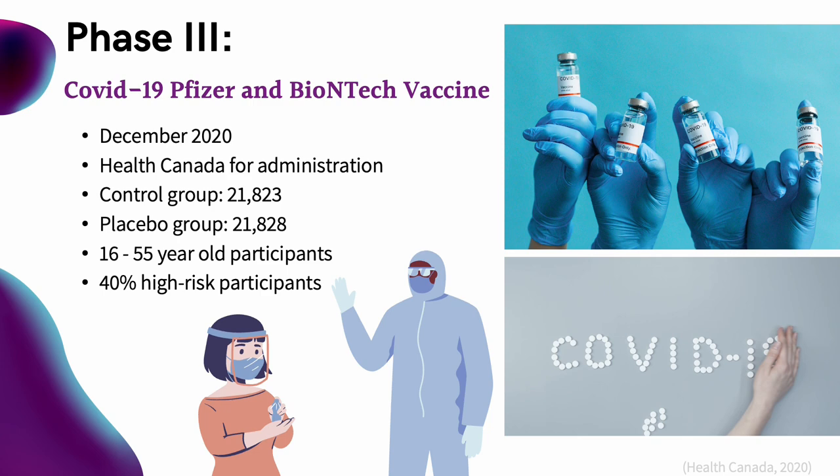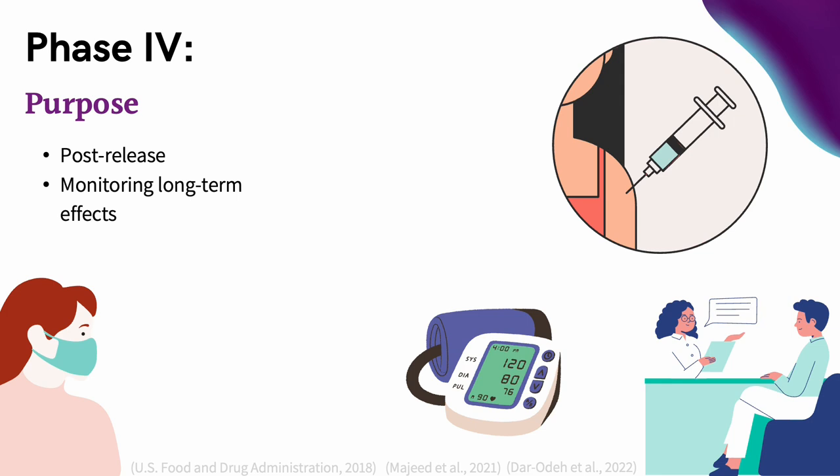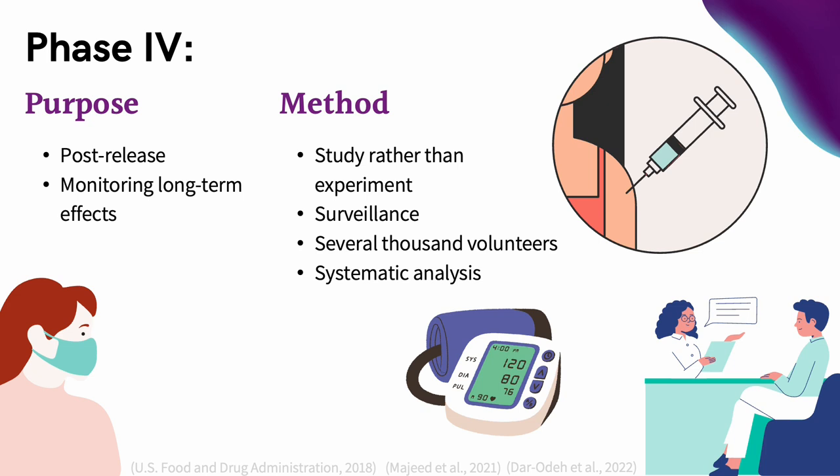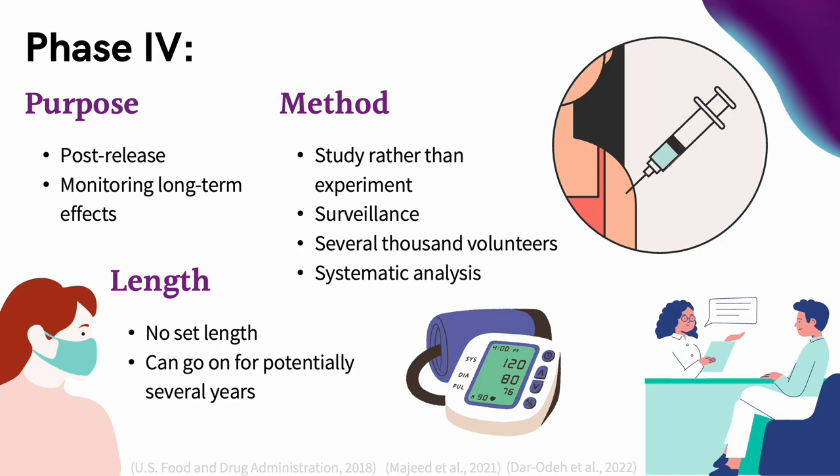The purpose of Phase 4 is to monitor the long-term results of the drug release that occurred in Phase 3. Data is collected on the positive and negative effects through a survey or database, and thousands of participants and their data are used to conduct systematic reviews. In Phase 4, there is no finite length, as this is a study of long-term effects that can potentially go on for several years.